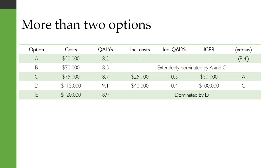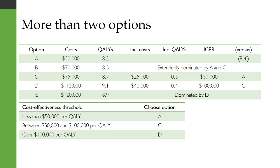For option C, we calculate its incremental costs and incremental QALYs versus A, and conclude it has an ICER of $50,000 per QALY. For option D, we compare it to option C and find that it has an incremental cost-effectiveness ratio of $100,000 per QALY. This means that if our cost-effectiveness threshold is less than $50,000 per QALY, we should choose option A. If our threshold is between $50,000 and $100,000 per QALY, we should choose option C. And if it's over $100,000 per QALY, we should choose option D.